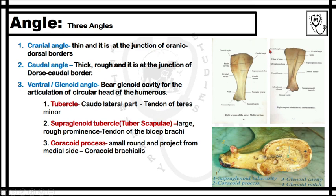There are three angles of the scapula bone: the cranial angle, which faces toward the head; the caudal angle, which faces toward the tail; and the ventral angle, which faces toward the body. The ventral angle is also known as the glenoid angle because it bears the glenoid cavity. The cranial angle is thin and is located at the junction of the craniodorsal border.